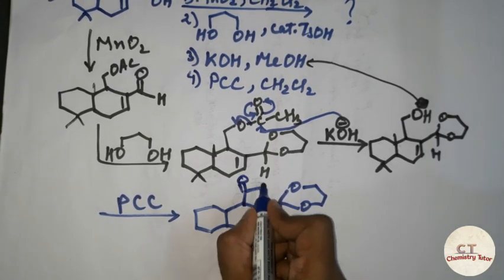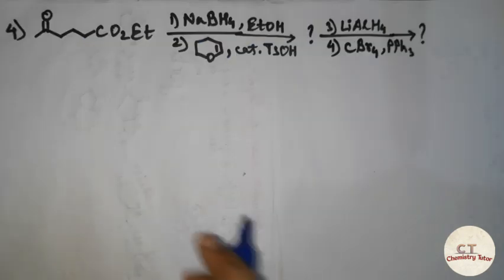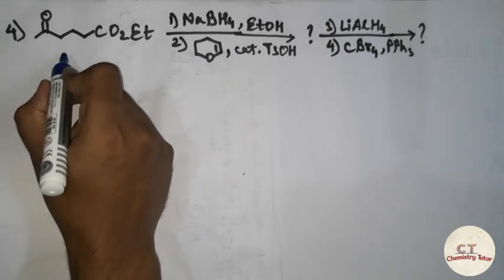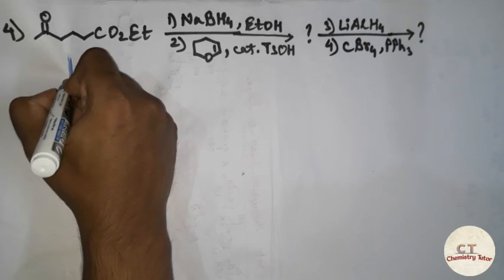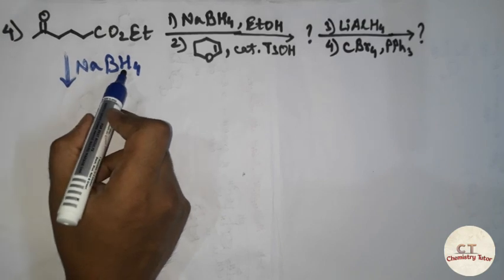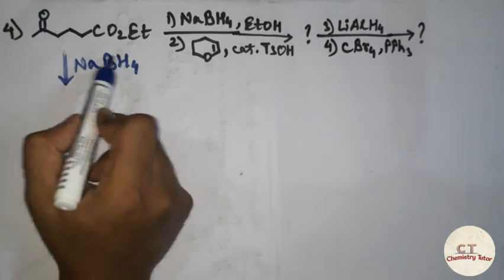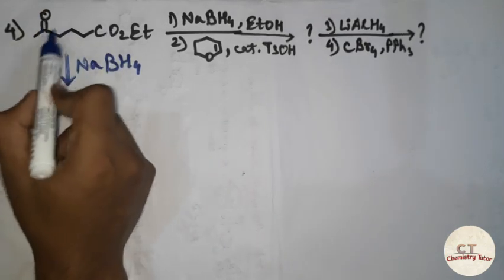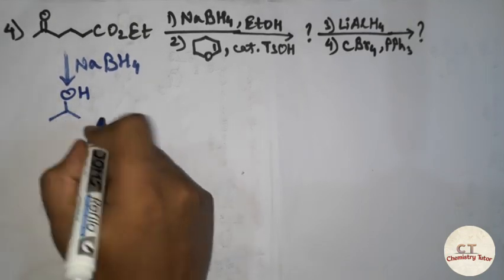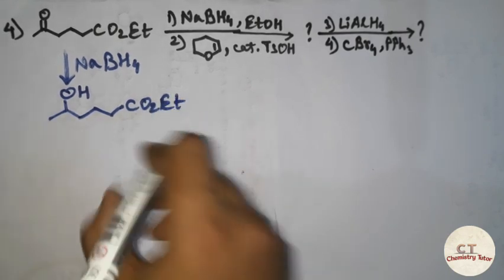Let's start the next example. We have been given NaBH4. What is the role of NaBH4? It selectively reduces the carbonyl group — whether it is aldehyde or ketone. In this case it will reduce only the ketone to alcohol, and the ester will remain as it is.